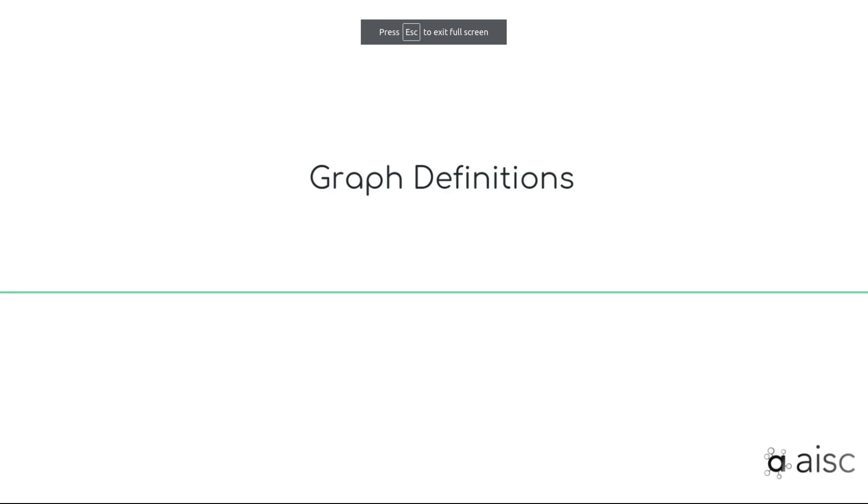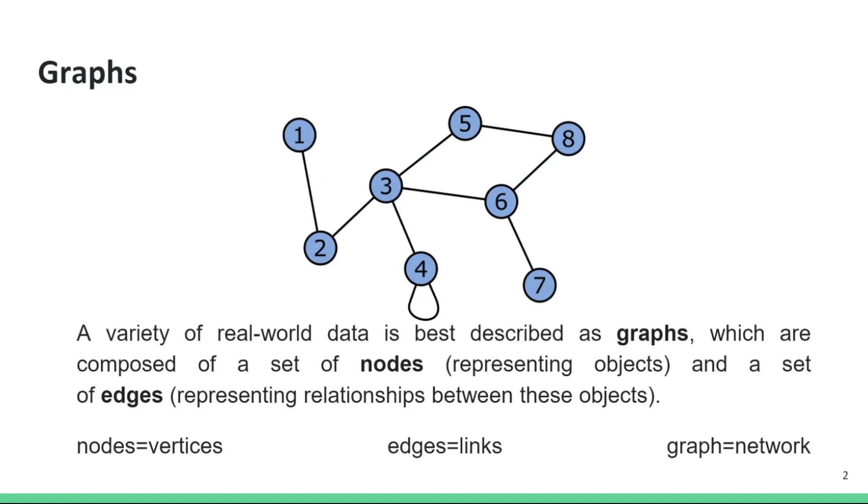In this video, we will go over some useful graph definitions. A graph is a flexible data structure that can describe a variety of real-world data. Graphs consist of nodes representing objects and edges representing relationships between these objects.